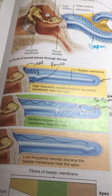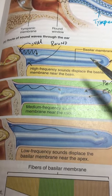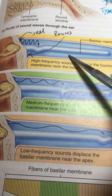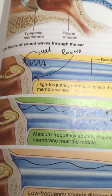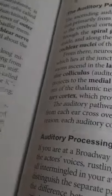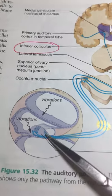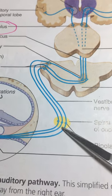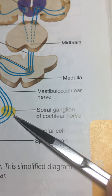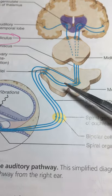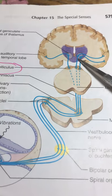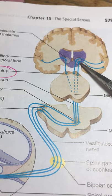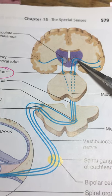To recap: if we unroll the cochlea we can see the scala vestibuli and scala tympani meeting at the helicotrema, with the scala media in between. Now let's look at how the innervation is set up. From the hair cells, signals travel out through the spiral ganglion to the cochlear nerve, which is part of the vestibulocochlear nerve. It enters the body at the medulla, and like almost all sensory information — except smell — it goes up to the thalamus.